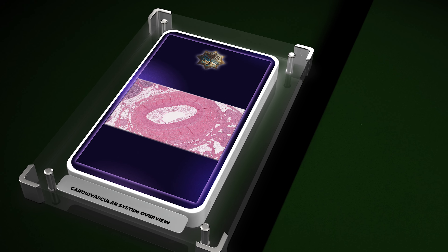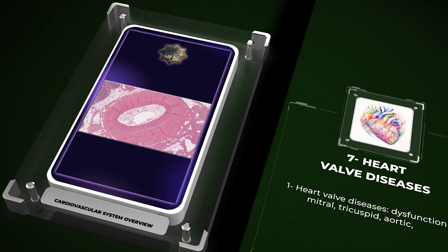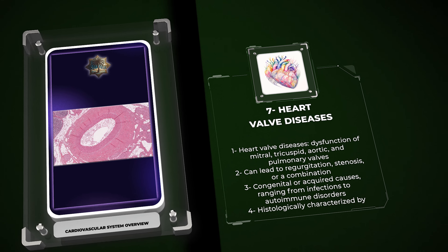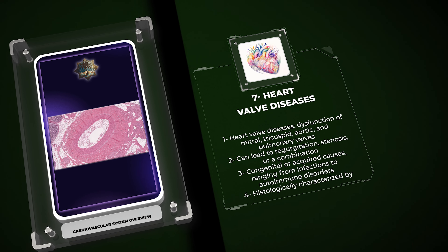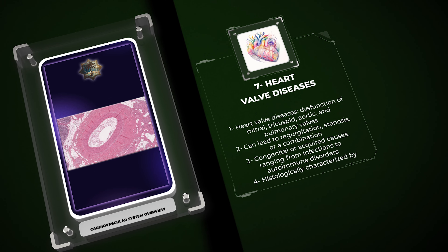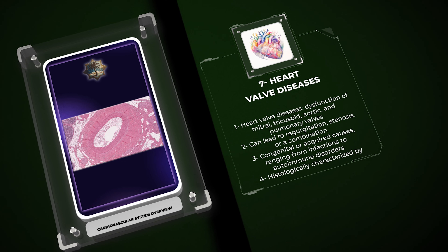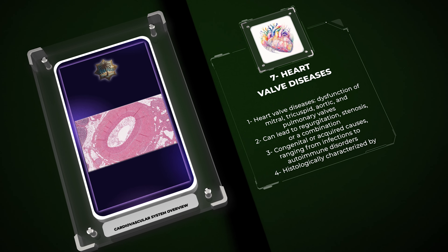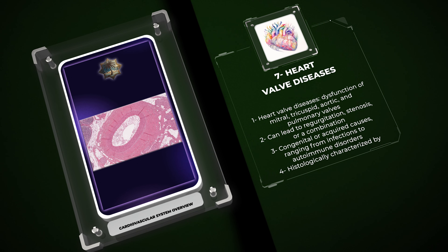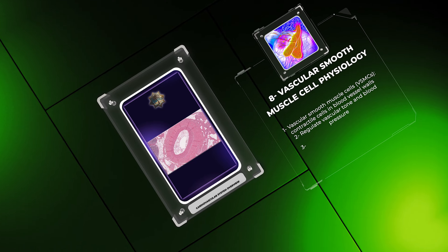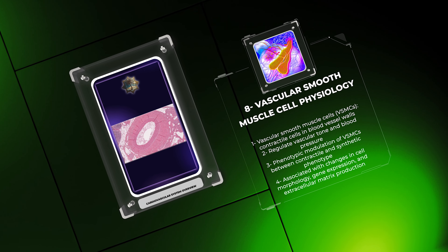Heart valve diseases involve the dysfunction of one or more of the four heart valves: the mitral valve, tricuspid valve, aortic valve, and pulmonary valve. Impairment of valve function can lead to conditions such as regurgitation, stenosis, or a combination of both. Valve diseases can be congenital or acquired, with causes ranging from infections to autoimmune disorders. Histologically, these conditions are characterized by alterations in valve structure, inflammation, and tissue remodeling.